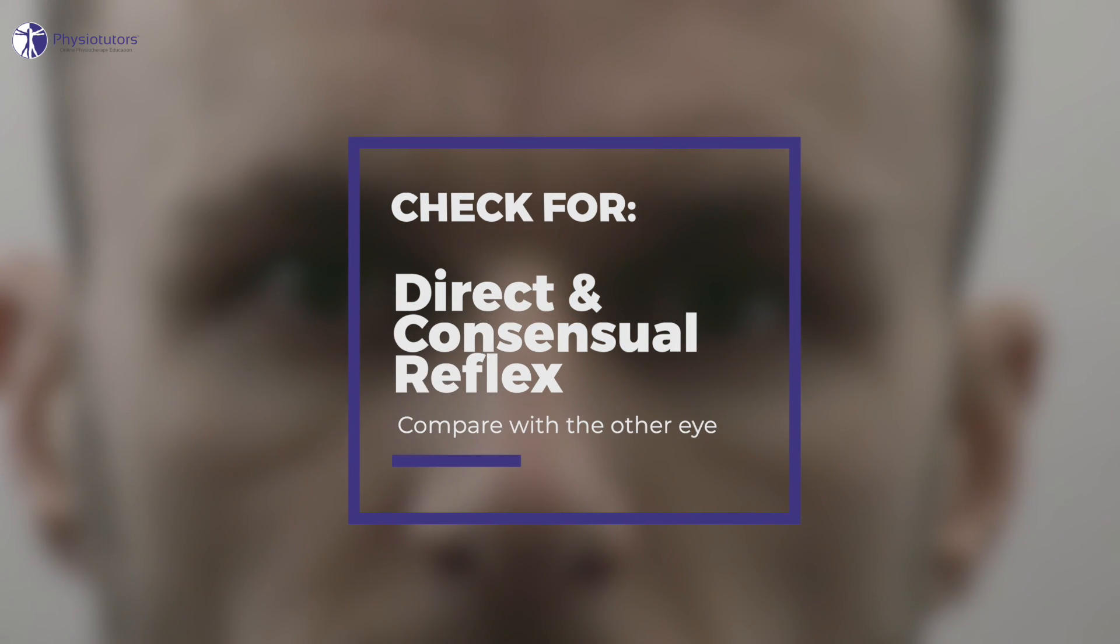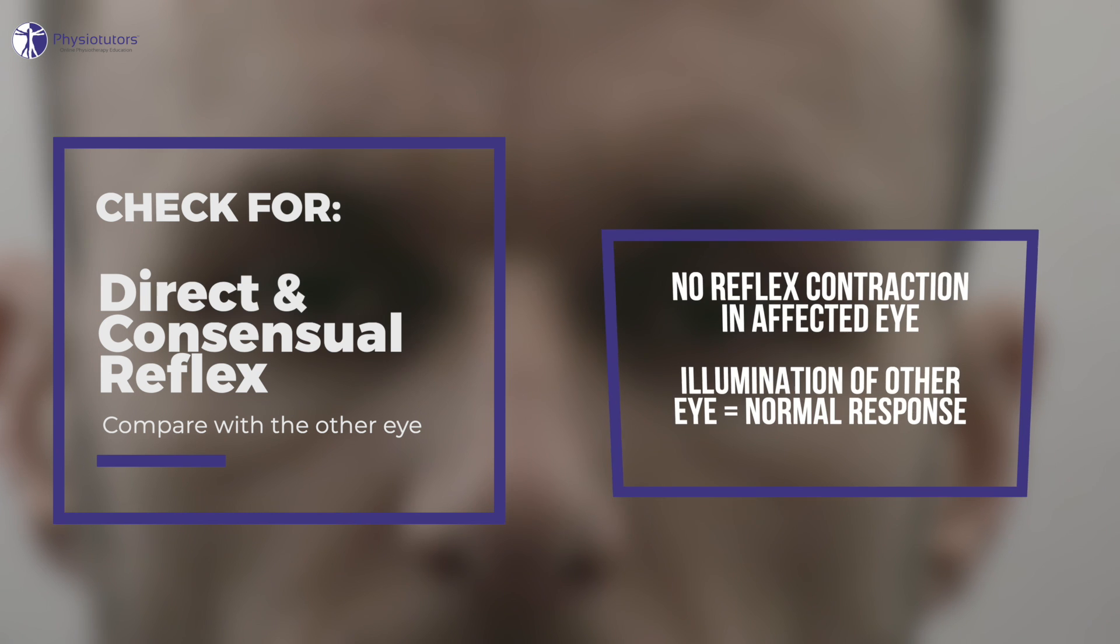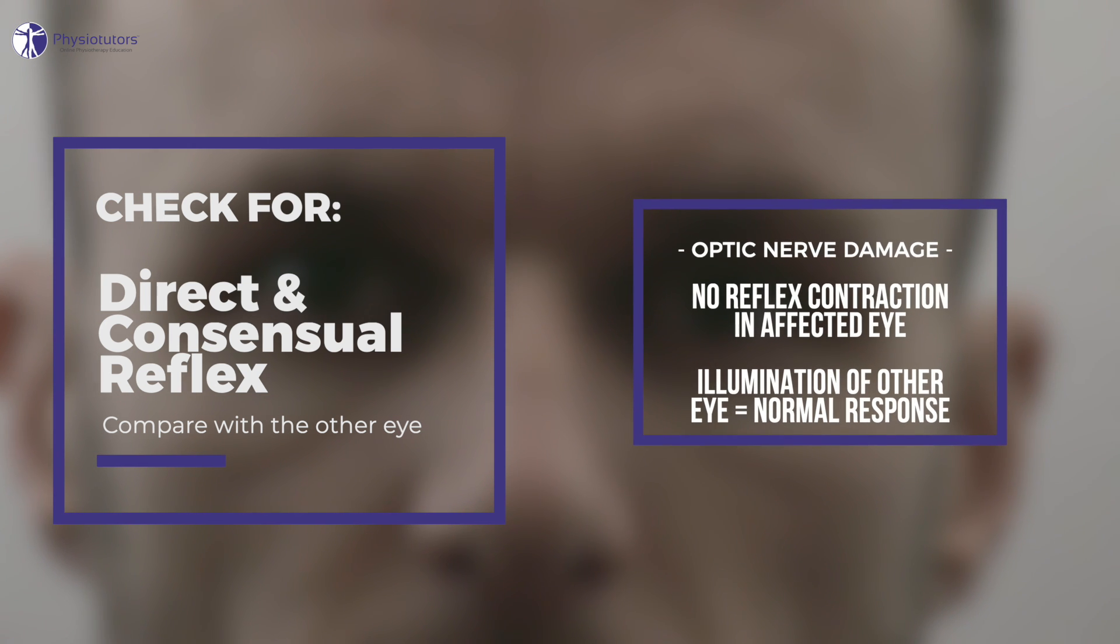Compare this with the other eye. Optic nerve damage would result in no reflex contraction of the pupils upon shining the light in the affected eye. Illuminating the other eye results in a normal response. Of course, the lights in the room should be dim.